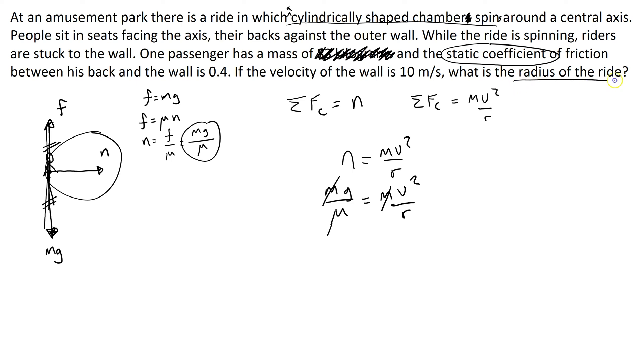But what we want to do is find the radius of the ride. So, let's solve this equation: g over mu equals v squared over r. Let's solve that for the radius. You multiply both sides by r, so you get r times g over mu equals v squared. And then you divide both sides by g and multiply both sides by mu. So this would be an equation that you would use on the AP test.